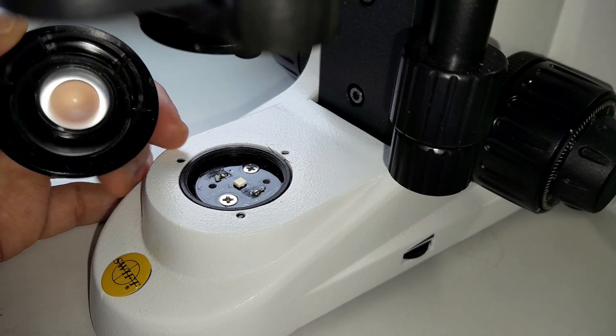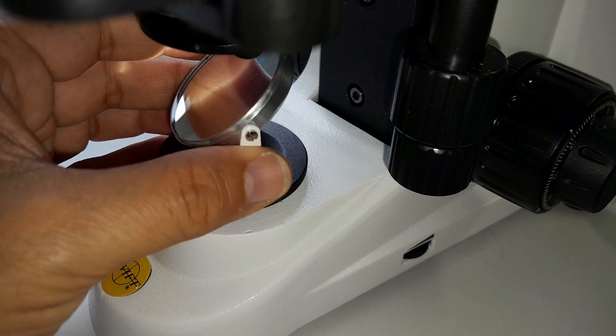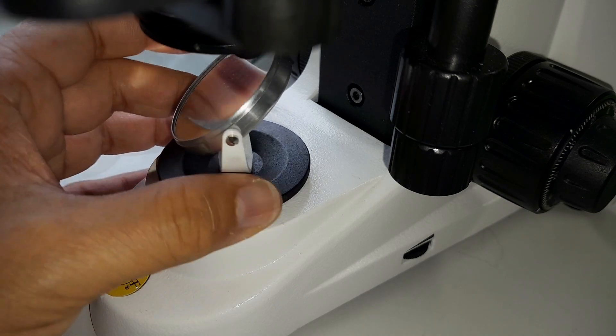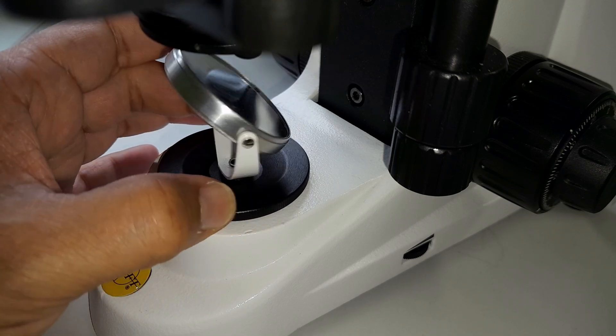Mounting the mirror only takes a minute or so. It's quite easy. You first have to remove the plastic cover of the lamp. This one also contains a little lens. And then you have to screw in the mirror. And then we're ready to go.